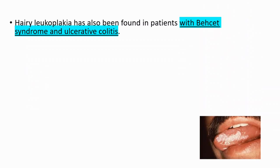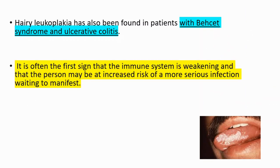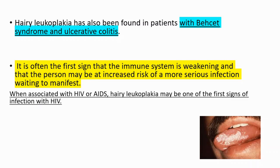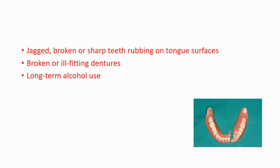Hairy leukoplakia has also been found in patients with Behcet disease or ulcerative colitis, but it is often the first sign that the immune system is weakening, and that person may be at increased risk of more serious conditions. When associated with HIV or AIDS, hairy leukoplakia may be one of the first signs of infection with HIV.